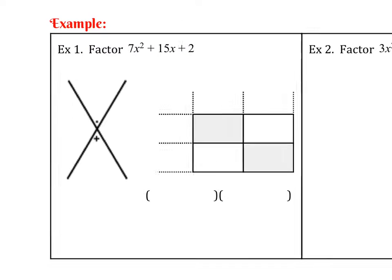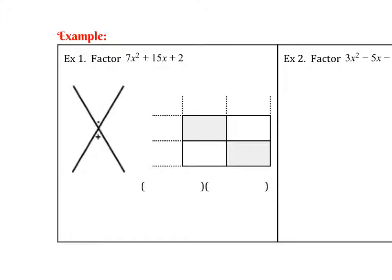We have 7x squared plus 15x plus 2. The values that go on the top is always a times c. So a is the number in front of x squared, c is the number in the back. So we're looking at a times c, which is 7 times 2 or 14. Then at the bottom, b is our b value, which is 15. You can think of that as the basement, so the number that goes in the basement is 15.